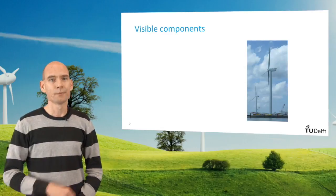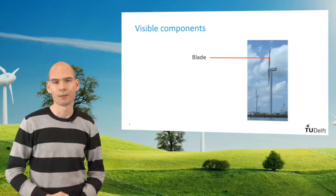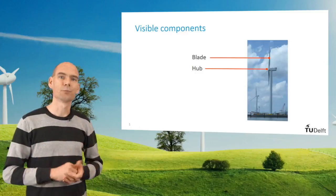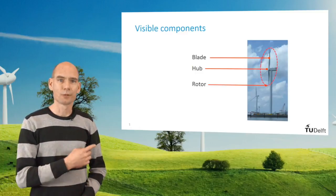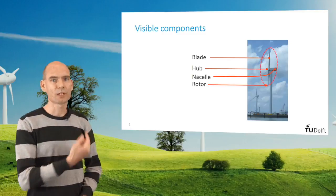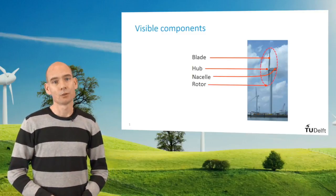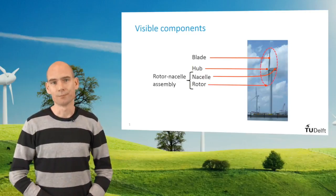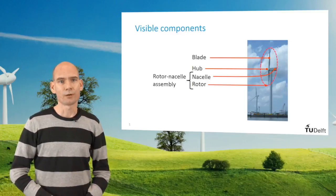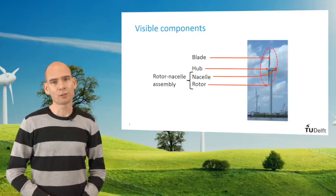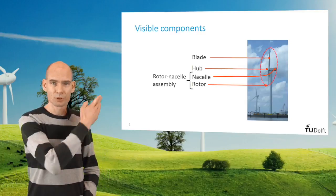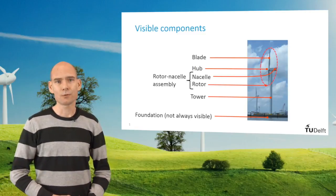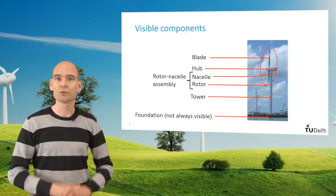As you all know, these moving parts are the blades. The blades connect to the hub and together they form the rotor. The rotor connects to the nacelle, which houses the machinery. The combination of rotor and nacelle is aptly called the rotor-nacelle assembly, often abbreviated to RNA. The rotor-nacelle assembly is supported by the tower and this rests on the foundation. The tower and foundation together are called the support structure.